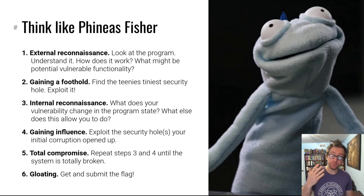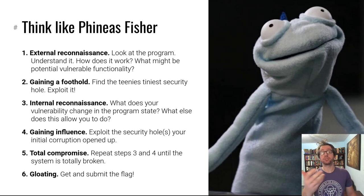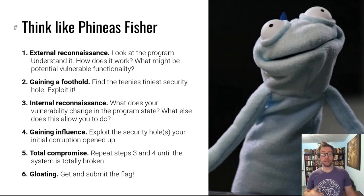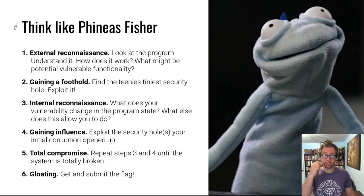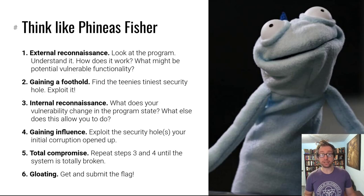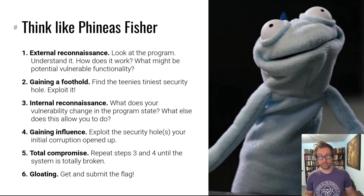The functionality that's going to be vulnerable is the functionality you can interact with directly — that your user input touches and processes. Once you have an idea of potentially vulnerable functionality, you want to exploit it. Find the smallest security hole. Maybe there is an off-by-one error in an input processing routine, a stack buffer overflow, or a sign-ness error in a length check. Find that smallest security hole and exploit it.